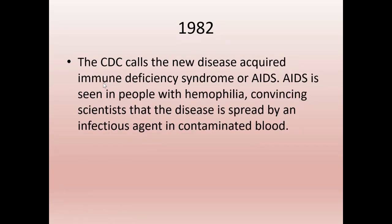In 1982, the CDC renames it AIDS — Acquired Immune Deficiency Syndrome. It's now also being found in people with hemophilia, convincing scientists that it might be spread by blood. At the time, we still didn't know how it was spread. One branch of the CDC was researching recreational drug use to see if that was causing it.